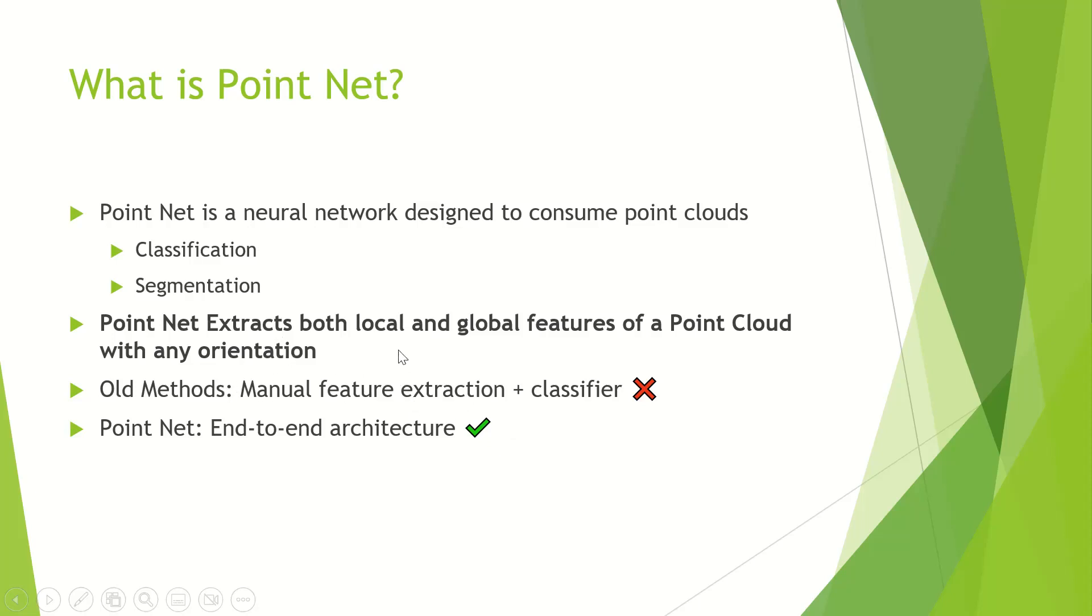Why is PointNet important? Previous methods typically relied on manual feature extraction or a different kind of feature extraction that was dependent upon the application. Once you would extract these features, you would feed them into a basic classifier like a linear model or support vector machine or multilayer perceptron. What PointNet does, it introduces an end-to-end architecture, a single pipeline that removes the manual component and removes the application-dependent component. Instead of the manual component, you have a learned component. Those learned local and global features are fed to either the segmentation head or the classification head.